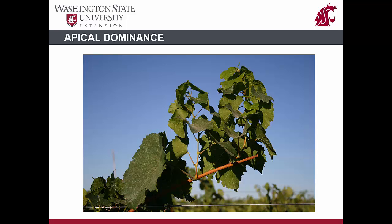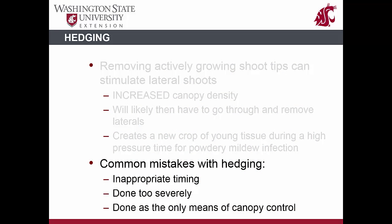When a shoot tip is removed, seen here at the bottom of the picture, side shoots will develop. The most common mistake with hedging is inappropriate timing. Hedging late in the summer results in removal of too much shoot growth, which is also removal of nutrient reserves. It can overstimulate summer lateral shoot growth, creating a denser canopy as previously described. The trick to hedging is to only remove the growing tip, not the top two feet of the canopy. The other very common mistake is that people use hedging as their only means of canopy control, resulting in added labor costs from repeated vineyard passes to hedge vines multiple times a season. If this is required, more often than not it is an indication that the vine is out of balance.